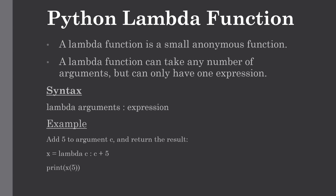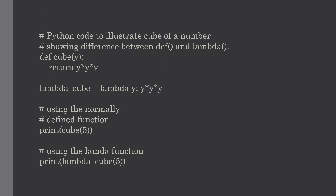Now let's understand the difference between a normal function and a lambda function. Let's consider this example — a program that returns the cube of a given value. Both the cube function and the lambda function behave the same way. While using def, we need to define a function with a name, such as cube, and pass one value to it.